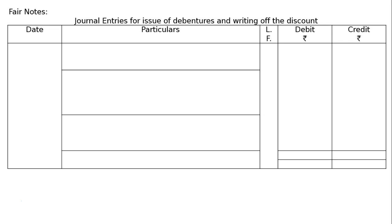Now, in the journal entries for issue of debentures and writing off the discount, we will have date, particulars, ledger folio, and debit and credit columns with Rs. symbols.